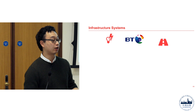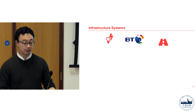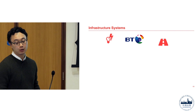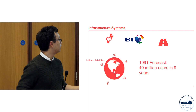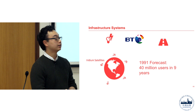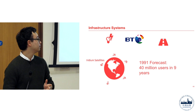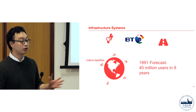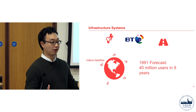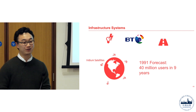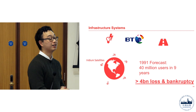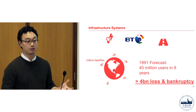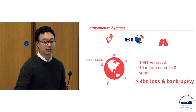Infrastructure is characteristically very expensive to replace when broken. One of the big problems BT faces is not wanting to keep replacing services and incurring massive losses. As an example: in 1991, Iridium satellites forecasted 14 million users in 9 years, then launched around 64 satellites at massive cost. They ended up losing 4 billion US dollars and went bankrupt.